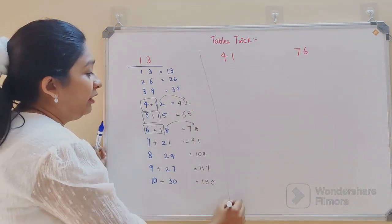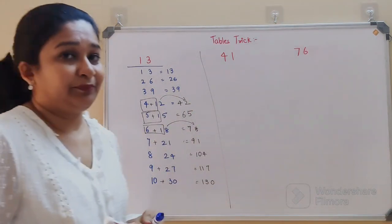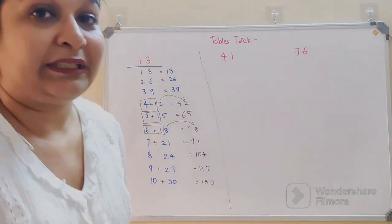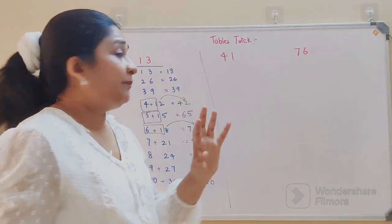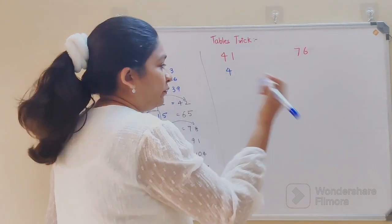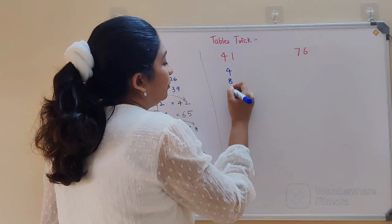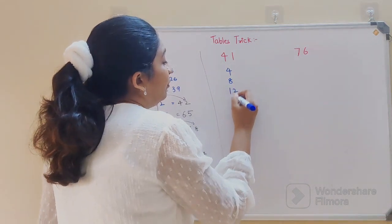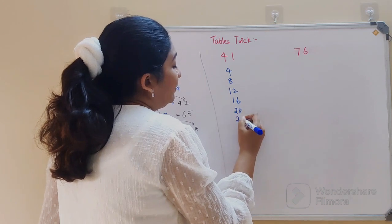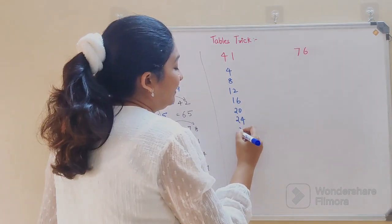So now let's try and figure out what is 41's table. Again, 4's table we write down, which is 4, 8, 12, 16, 20, 24, 28, 32, 36, and 40.